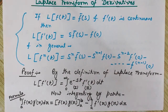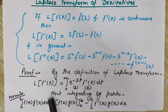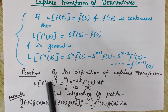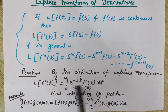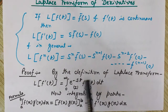By the definition of Laplace transform, we know that the Laplace transform of f(t) is the integral from 0 to infinity of e^(−st) · f(t) dt. So the Laplace transform of f'(t) would be the integral from 0 to infinity of e^(−st) · f'(t) dt, where f'(t) is in the place of f(t).